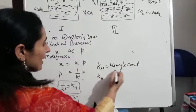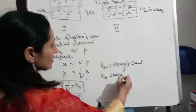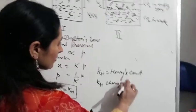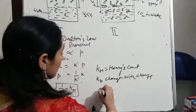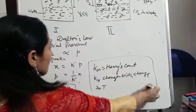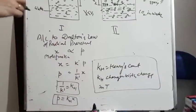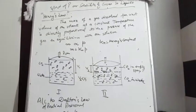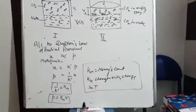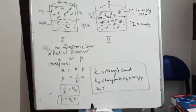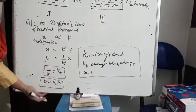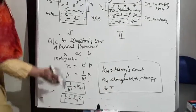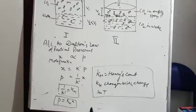So the partial pressure of a gas in the vapor phase is proportional to the mole fraction of the gas in the liquid. That is: P = K_H × X (mole fraction). Henry's constant K_H changes with temperature — that is its key characteristic. This gives us the relationship between partial pressure and mole fraction of a dissolved gas.